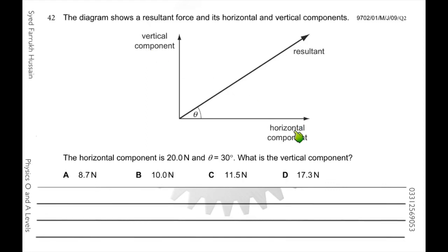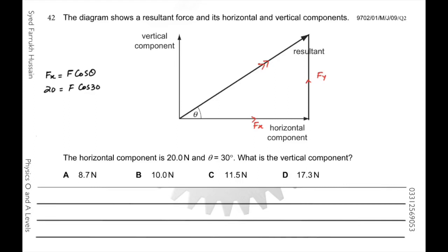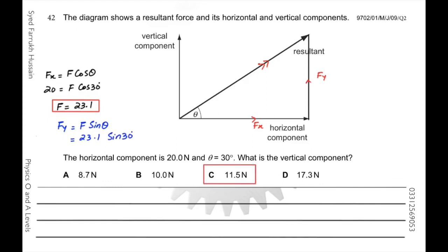The vertical component, horizontal component, and resultant form a vector triangle. The horizontal force Fx is given, and the angle is also given. Writing Fx equals F cos theta: Fx is 20, angle is 30 degrees, so F equals 20 divided by cos 30, giving F equals 23.1 newtons. The vertical component Fy equals F sin theta: 23.1 times sin 30 gives 11.5 newtons.